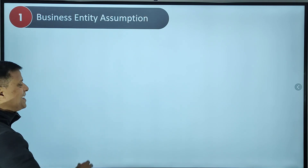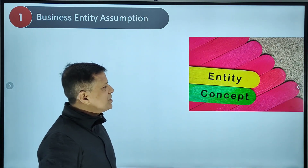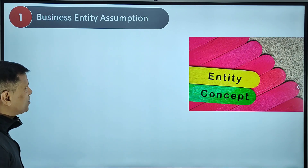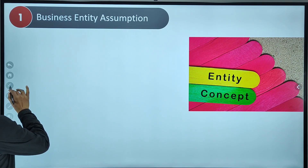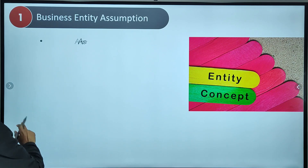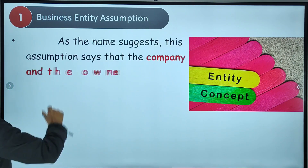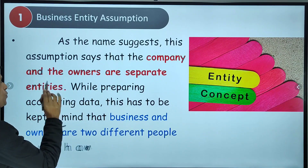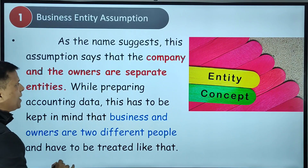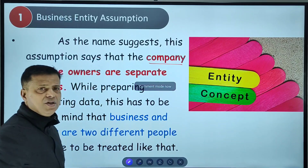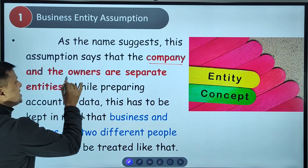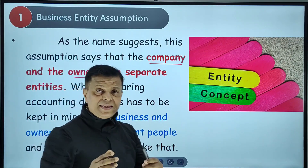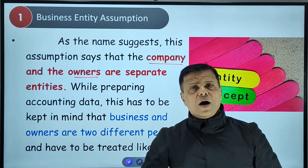So first of all, let's start with the first accounting assumption: the business entity assumption. The business entity assumption, as the name suggests, says that the company and the owners are separate entities. They are not treated the same.